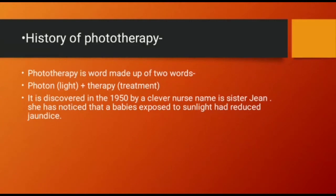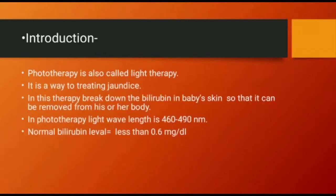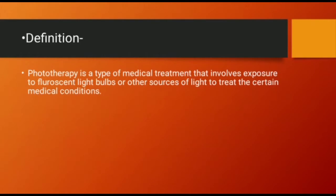Phototherapy is a treatment to manage jaundice, vitiligo, and hyperbilirubinemia, especially to decrease the total serum bilirubin level in the body. Phototherapy is also called light therapy. It is a way of treating jaundice in which bilirubin is broken down in the baby's skin so it can be removed from the body. In phototherapy, the light wavelength used is 460 to 490 nm, and the normal bilirubin level is less than 0.6 mg per dL.